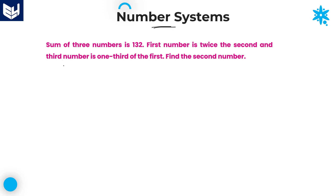This is the first question in this session. Sum of three numbers is 132. Three numbers are there: first number, second number, third number. The sum of these three numbers is equal to 132 according to the question.